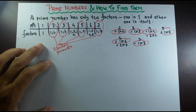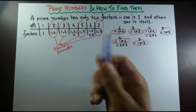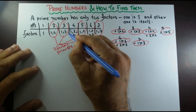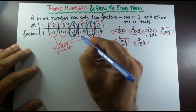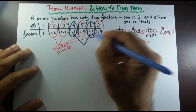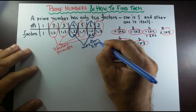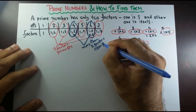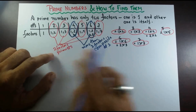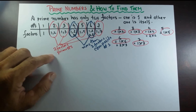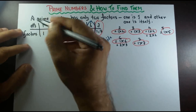Whenever we look at 4 and 6, 4 has more than two factors — three or four factors. Any number that has more than two factors, we call them composite numbers. By definition of these two, 1 is automatically disqualified from being either a prime number or a composite number.